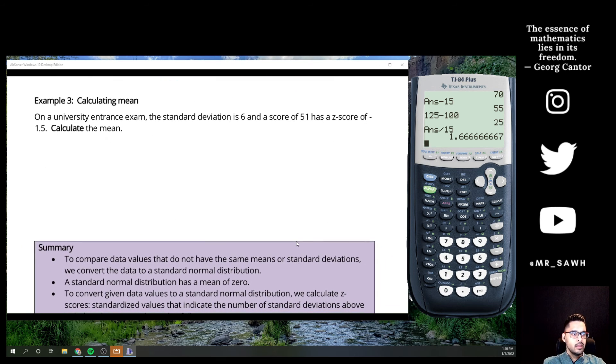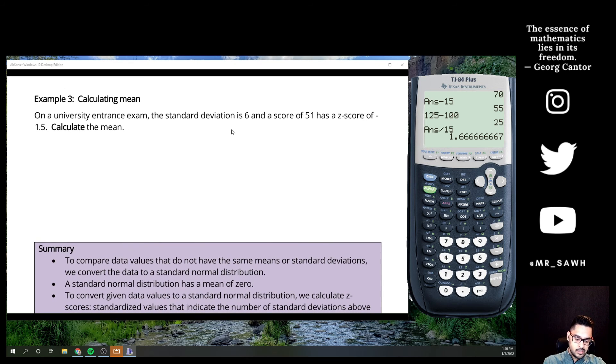What happens if I actually know what the z-score is? Can I calculate some specifics about a certain scenario? Right, so on a university entrance exam, standard deviation of 6, and a score of 51 gives us a z-score of 1.5. Okay, so this mark of 51% is better than the average. Oh wait, sorry. That z-score is negative.